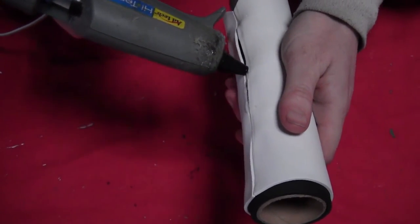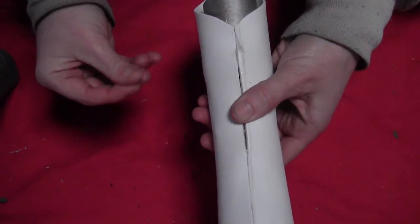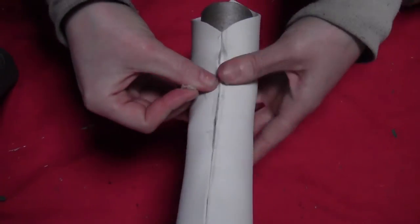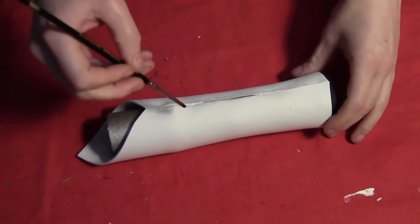And then put a final line of glue right down the center where the two pieces come together. Obviously wait until the glue is cool, don't actually touch it while it's hot. And that will fill in that crack so you won't see it once it's painted.